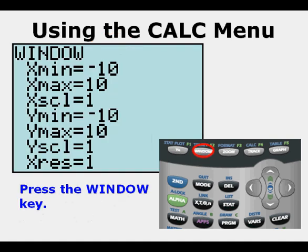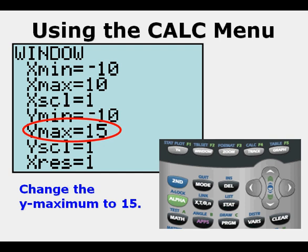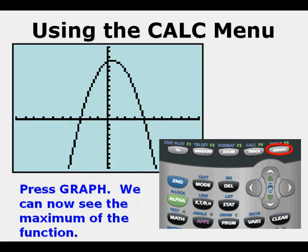Press the window key. Our y maximum is set at 10. Now let's change the y maximum to 15 to be able to see the top of that parabola or function. Press graph. We can now see the maximum of the function at the top of the parabola.